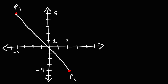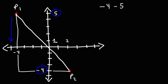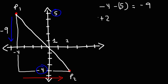Let's turn this into a right triangle. We need to go down along the y-axis from 5 to negative 4. Taking negative 4 and subtracting positive 5 gives us negative 9, so we're going down 9 units. Along the x-axis, we go from negative 4 to 2. Taking 2 minus negative 4 becomes 2 plus 4, which equals 6.